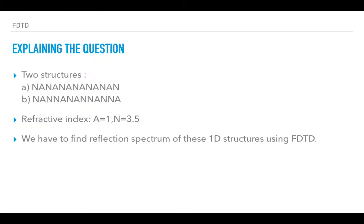Now let's explain the question. There are basically two structures that we have to make: the NAN periodic structure and the NAN Fibonacci structure. They are inhomogeneous media where the refractive index of N is 3.5 and A is 1, and their thickness is also different.